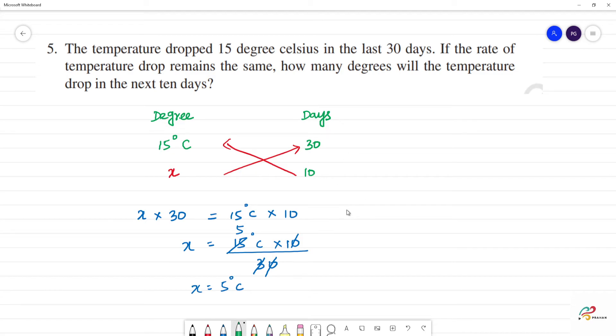So, next 10 days, the drop in temperature for next 10 days is equal to 5 degrees Celsius.